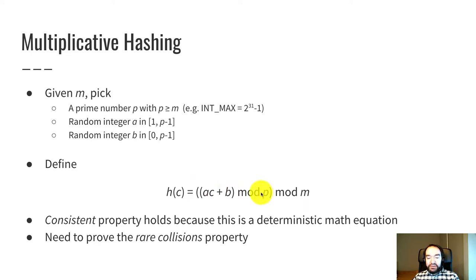So after that mod, we have a number 0 through p minus 1. If p is huge, this is still a pretty big integer. And then mod m takes the remainder of dividing that large integer by m. So that's what produces a number 0 through m minus 1.